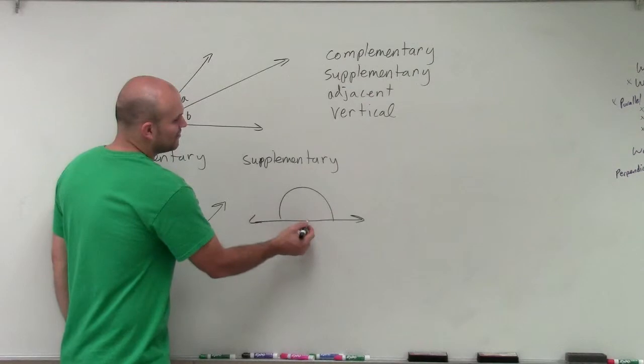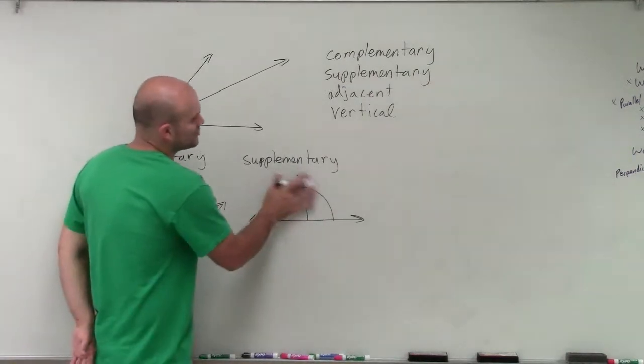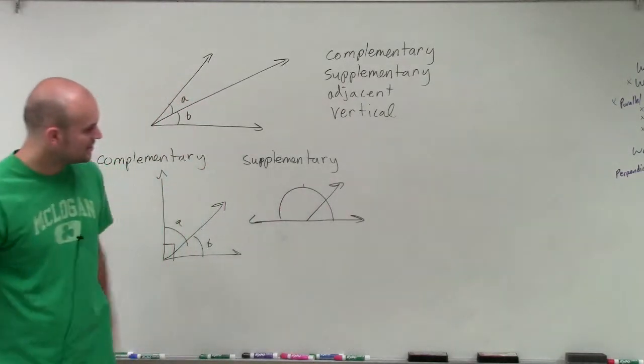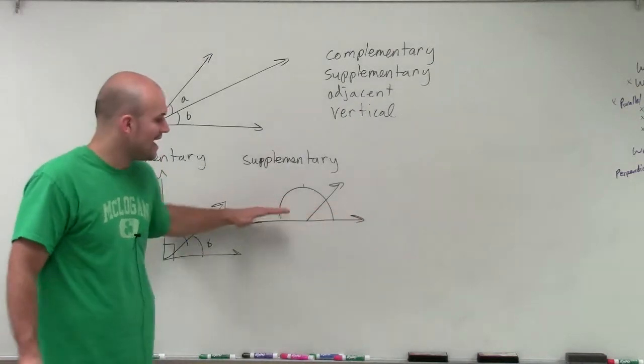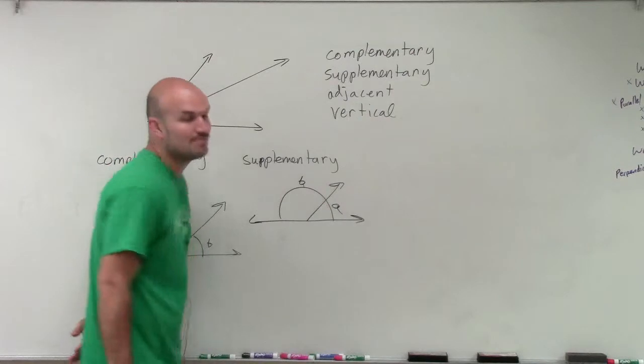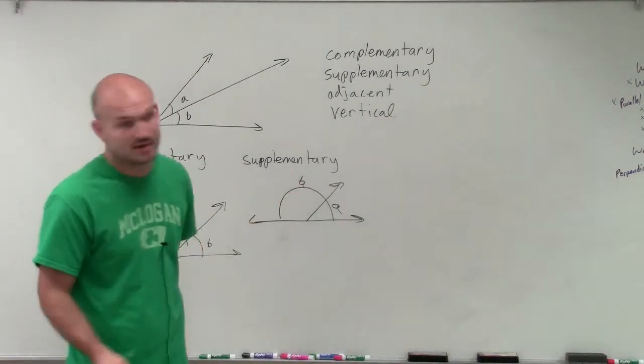So 180 degrees can be represented by using a straight angle, and you can see the straight angle is half of a circle. And a circle would be 360, so half of that is 180. So let's say I had my two angles, A and B. Well, if the measures of those two angles added up to 180, I would have supplementary angles.